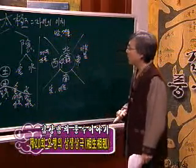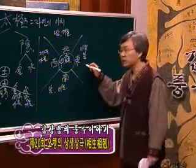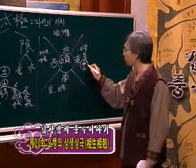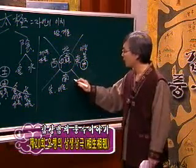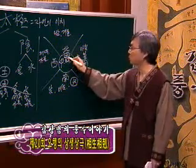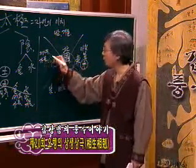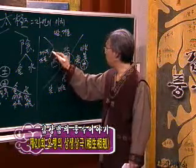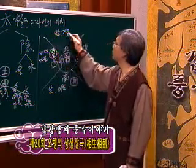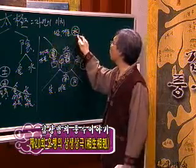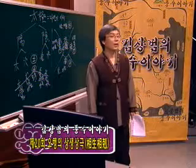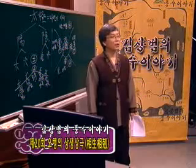오행적으로 배속을 시키게 되면 동쪽이 목기운, 남쪽이 화기운, 중앙이 토기운, 서쪽이 금기운, 북쪽이 수기운에 해당이 됩니다. 색깔로도 오행을 구분시켜 놓았습니다.